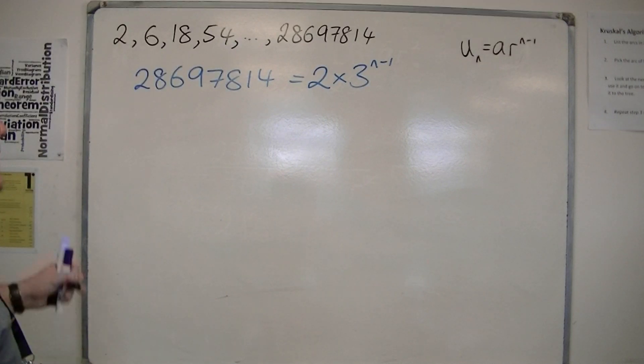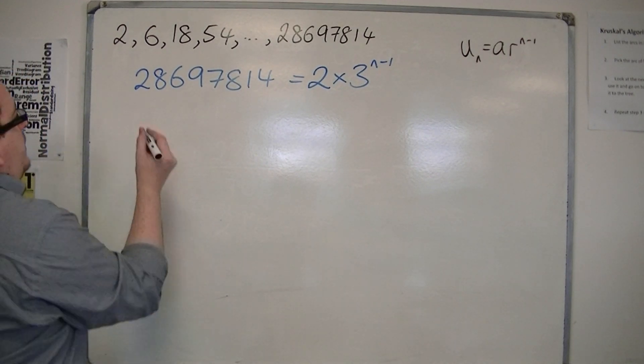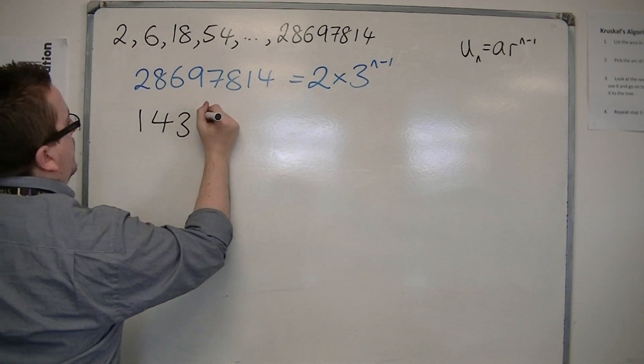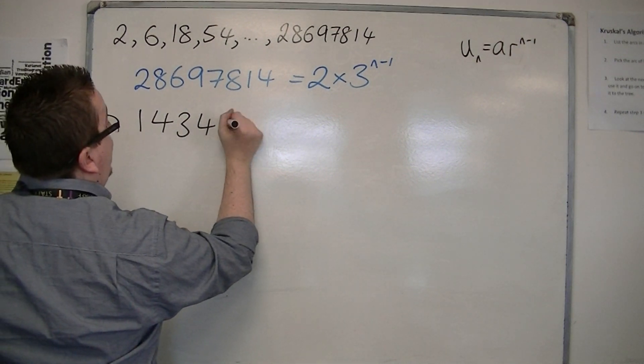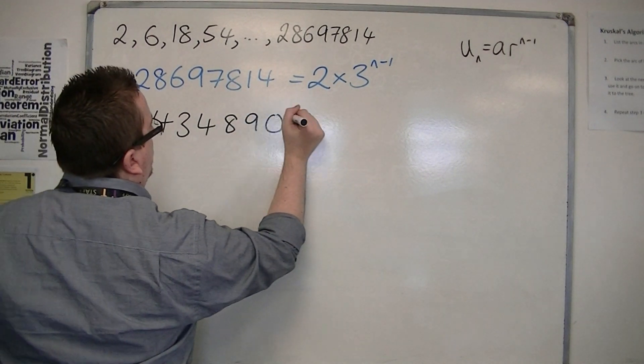So, the first thing I'm going to do is I'm going to divide both sides by 2. Now, hopefully I can do this straight off: 14348907.